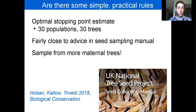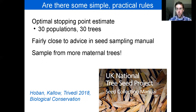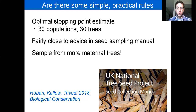This is fairly close to the guidelines in the Tree Seed Project manual, although it suggests a slightly lower number of about 15 trees per population. So our advice might be to, when possible, collect from more maternal trees per population.